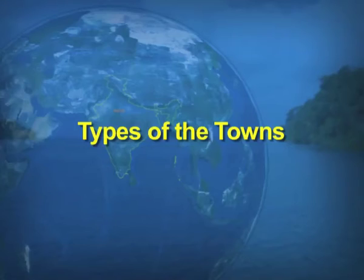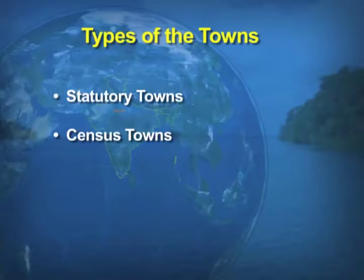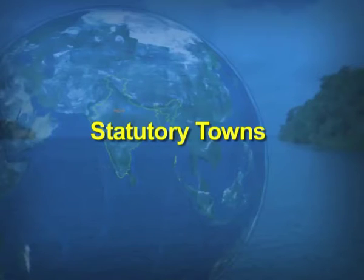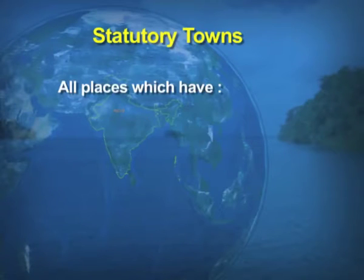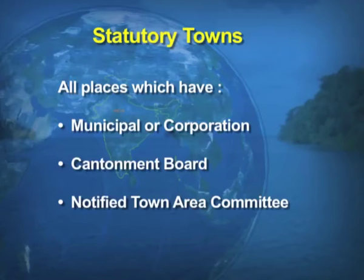Now we'll be talking about the types of towns. Generally there are two types of towns. One is statutory towns and number two, census towns. What are the statutory towns? All the places which have a municipality or corporation, cantonment board, or notified town area committee, they are all known as statutory towns.